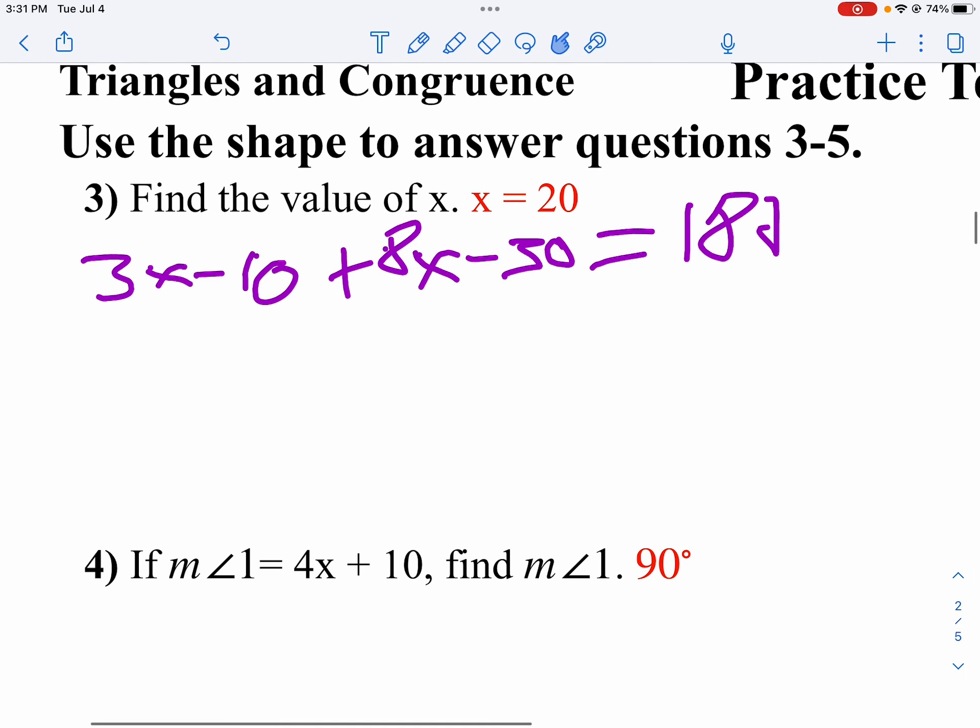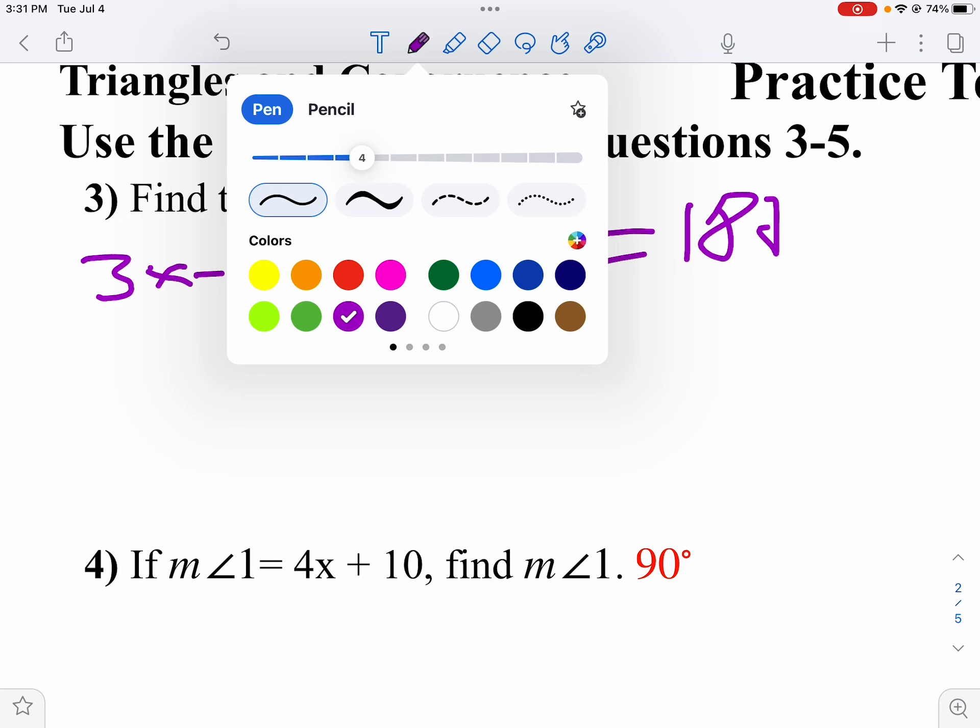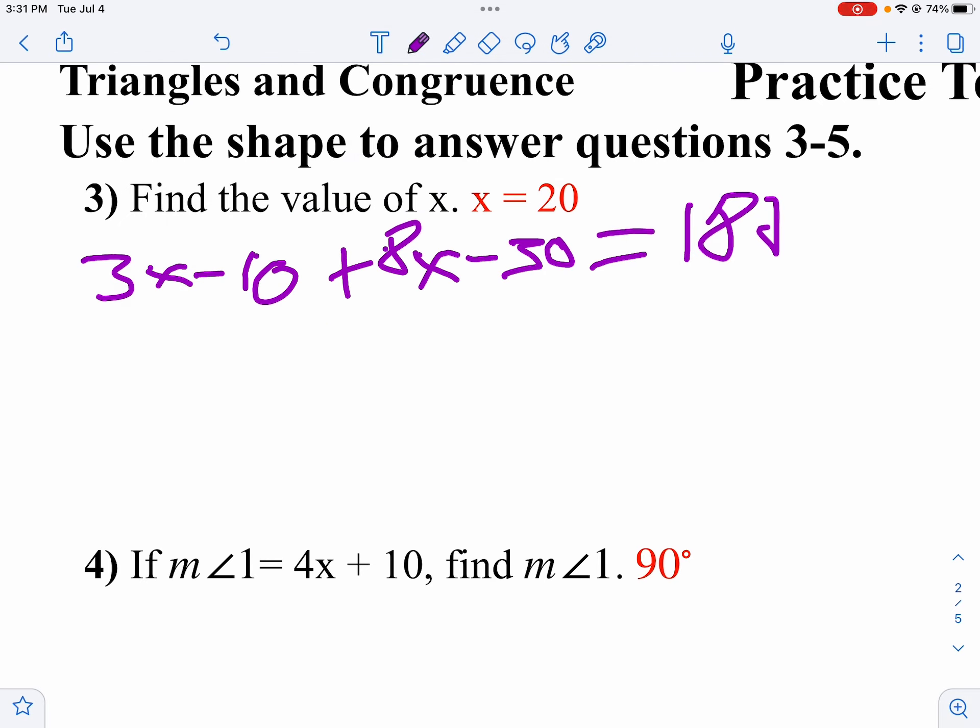I'll blow this up a little bit so I can write a little bit smaller and combine my like terms. 3x plus 8x is 11x. Negative 10 minus 30 is negative 40 equals 180. So we'll add 40 to both sides. 11x equals 220. I'll divide both sides by 11.